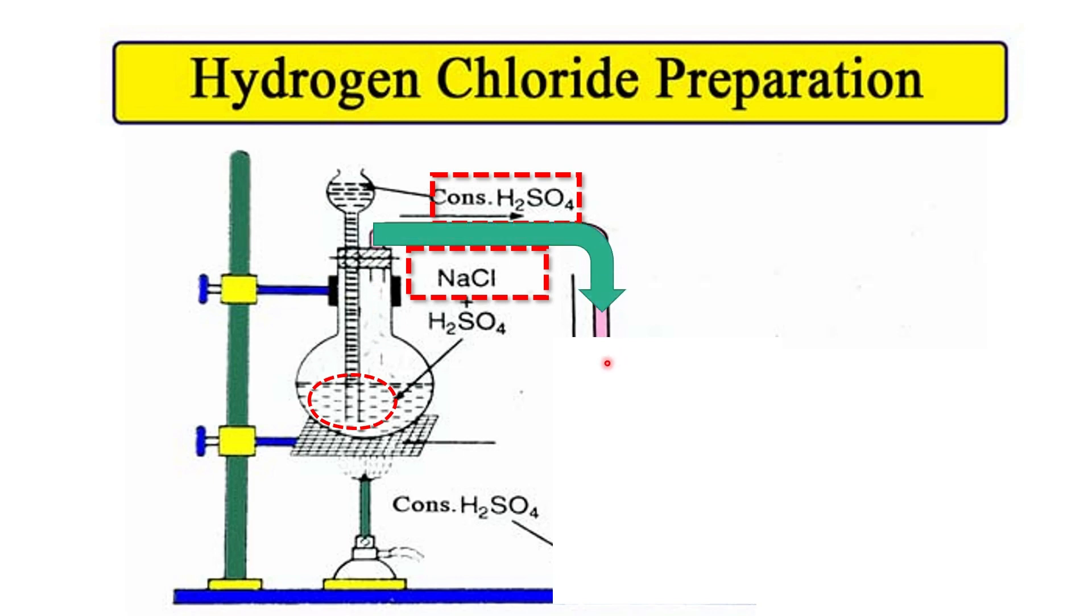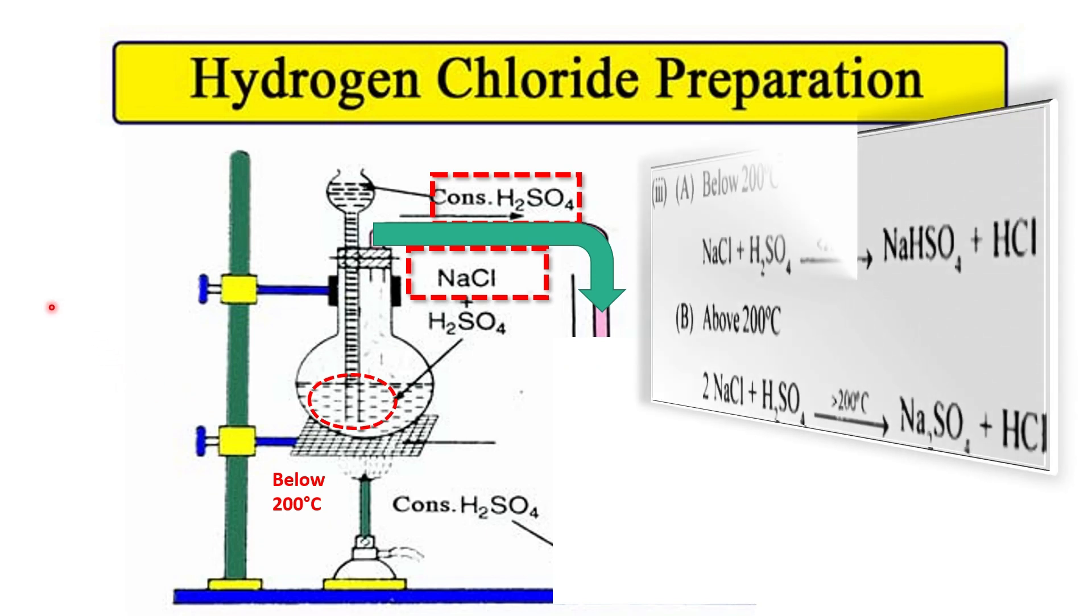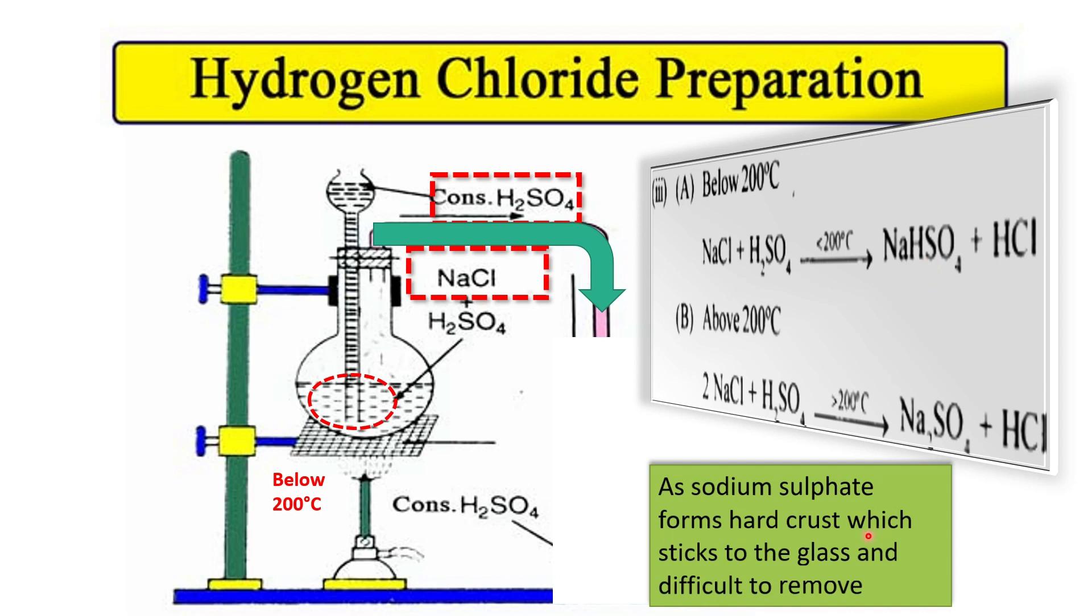The temperature maintained should be below 200 degrees Celsius. The reaction involved below 200 degrees Celsius will give you sodium hydrogen sulfate. But if you perform this reaction above 200 degrees Celsius, you will get sodium sulfate. What is the problem with sodium sulfate? It forms hard crust which sticks to the glass and is difficult to remove.